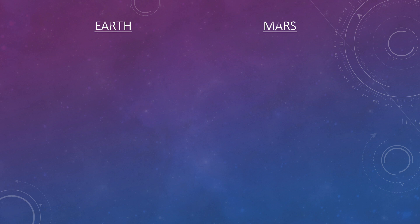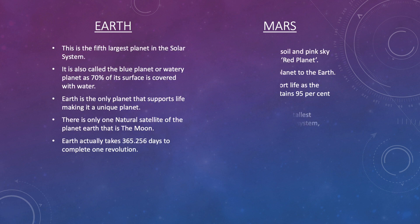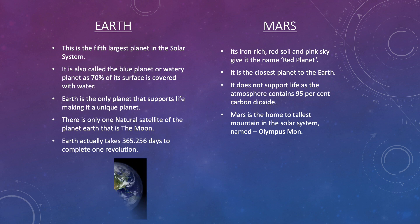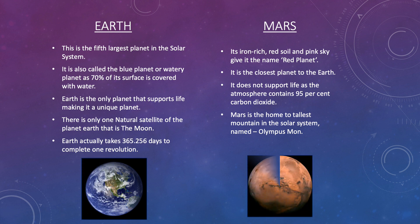Now it's time to talk about the most unique planet, that is Earth. This is the fifth largest planet in the solar system. It is also called the blue planet or watery planet as 70% of its surface is covered with water. Earth is the only planet that supports life, making it the most unique planet. There is only one natural satellite of the planet Earth and that is the Moon. Earth takes 365.256 days to complete one revolution.